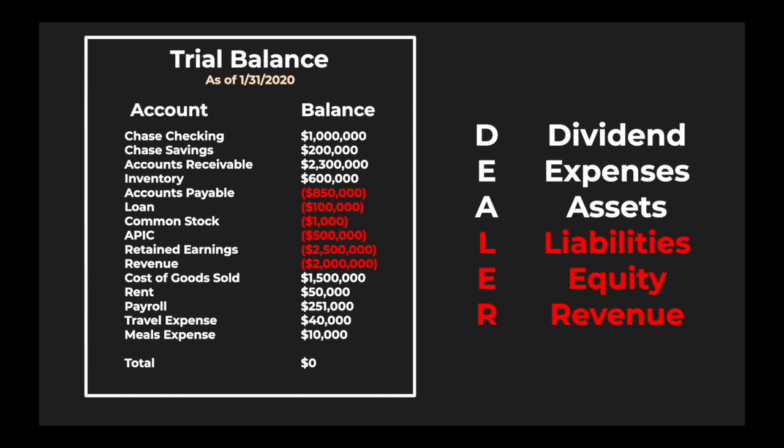DEALER tells you which accounts will have a debit nature and which will have a credit nature. Dividends have a debit nature; expenses are the same way — when you record an expense you record a debit to expense and a credit to either cash or accounts payable. Assets are also debit nature, while liabilities, equity, and revenue have a credit nature whenever you record a journal entry for them.